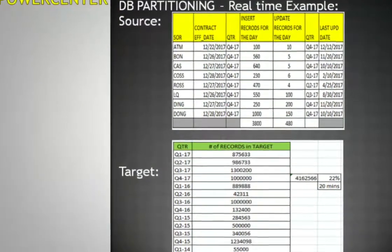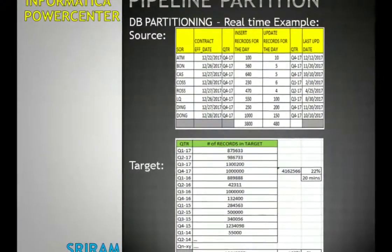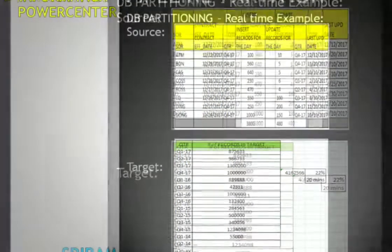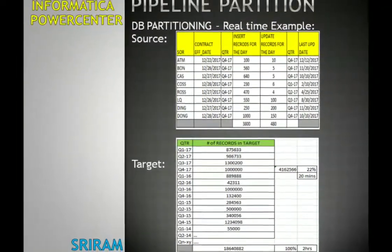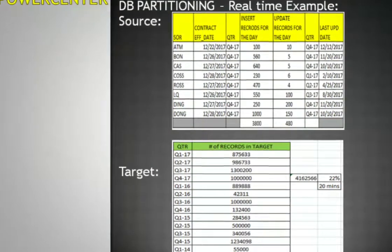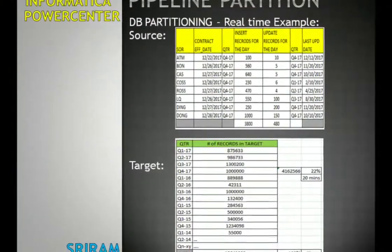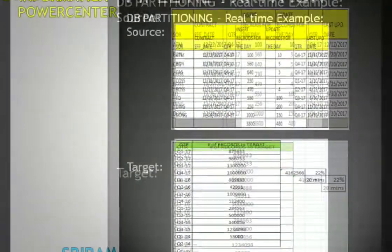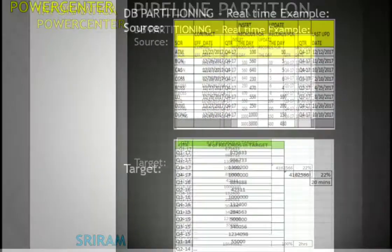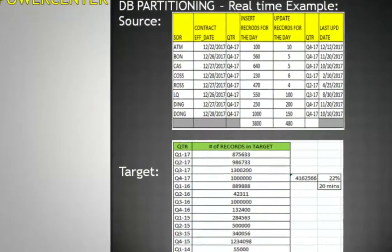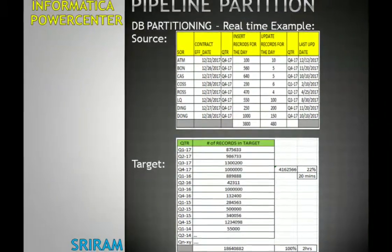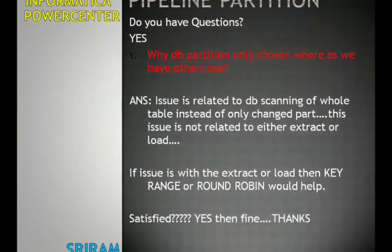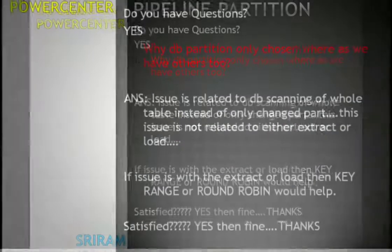Scanning 15 quarters of data means scanning around 18 million records, which takes more than 2 hours. But if we scan only 4 quarters, that is only 4 million records — which is about 22 percent of the total number of records in the target. This means performance is increased significantly: instead of 2 hours, the session will complete in only 20 minutes with database partitioning. That is the advantage of database partitioning.